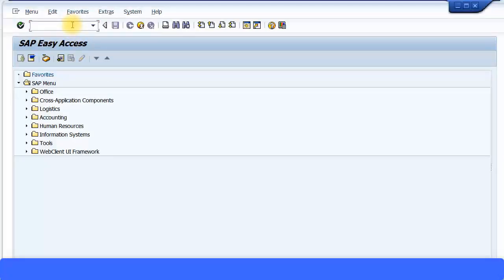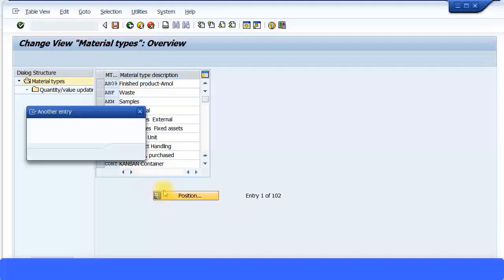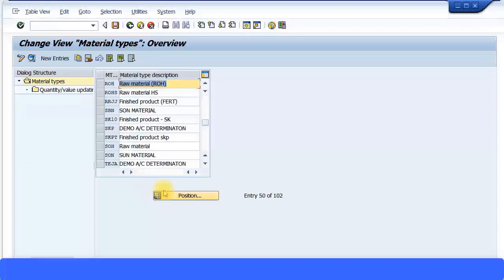If you come to the SAP transaction menu and go to the short transaction code OMS2, this is where we configure the material types. One of the material types I used was ROH, the standard one for raw materials. This ROH for raw materials, if I just double-click on this...